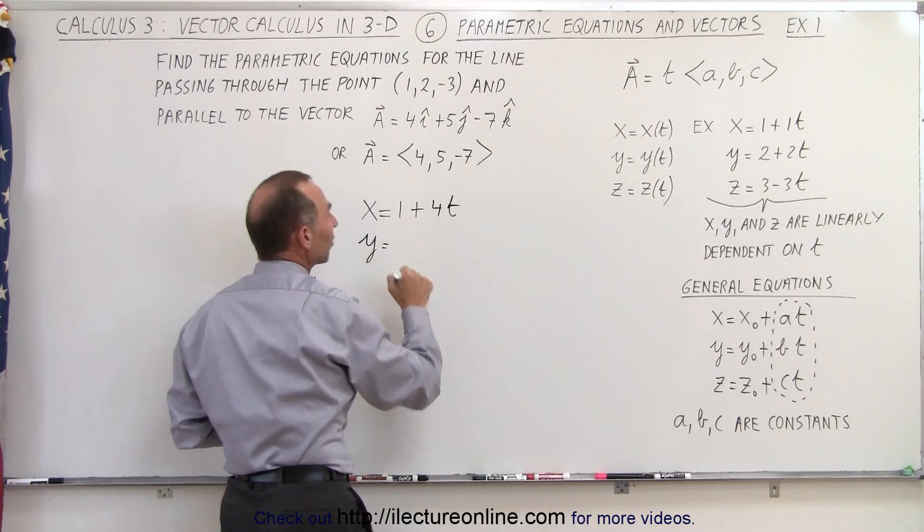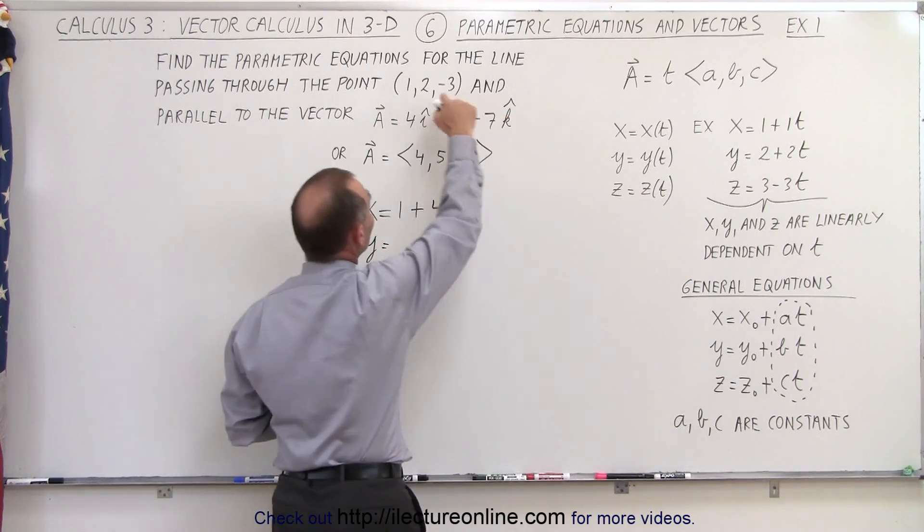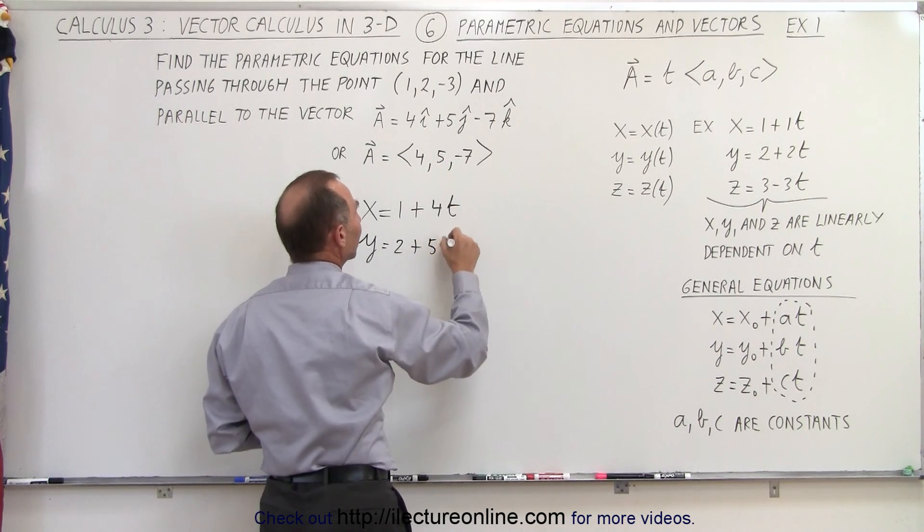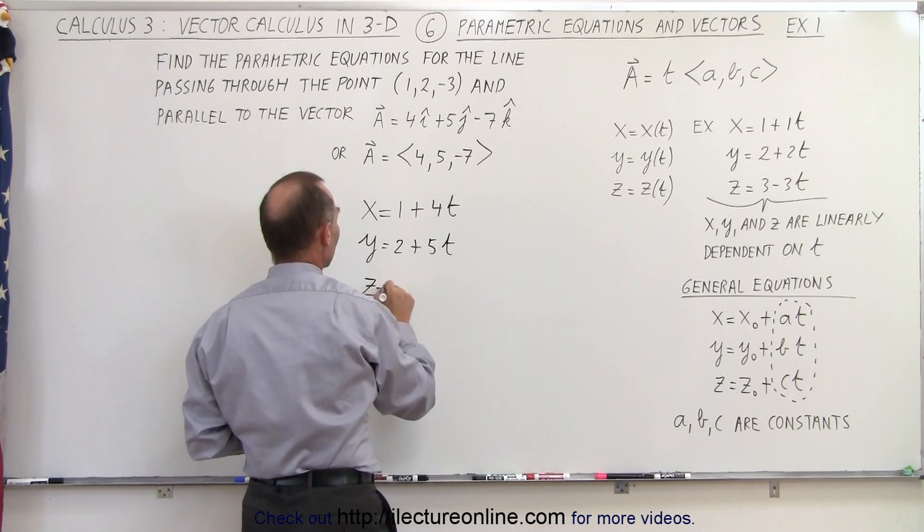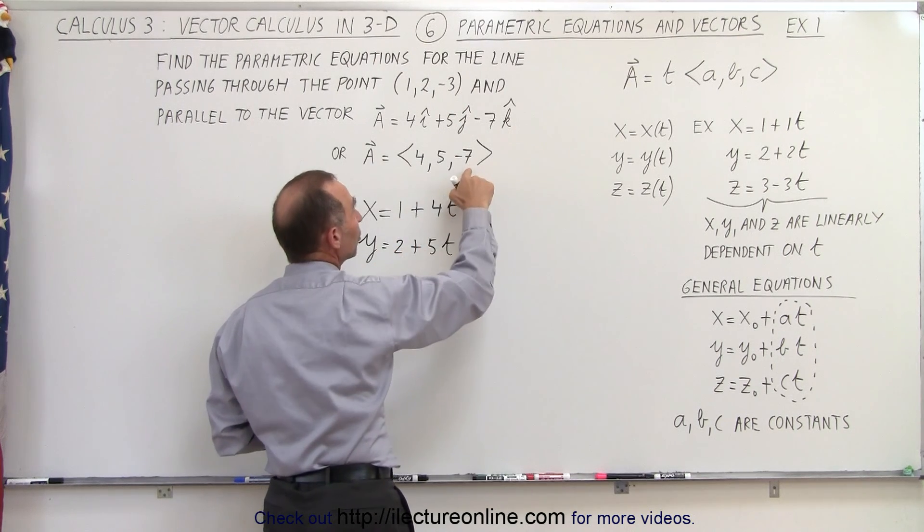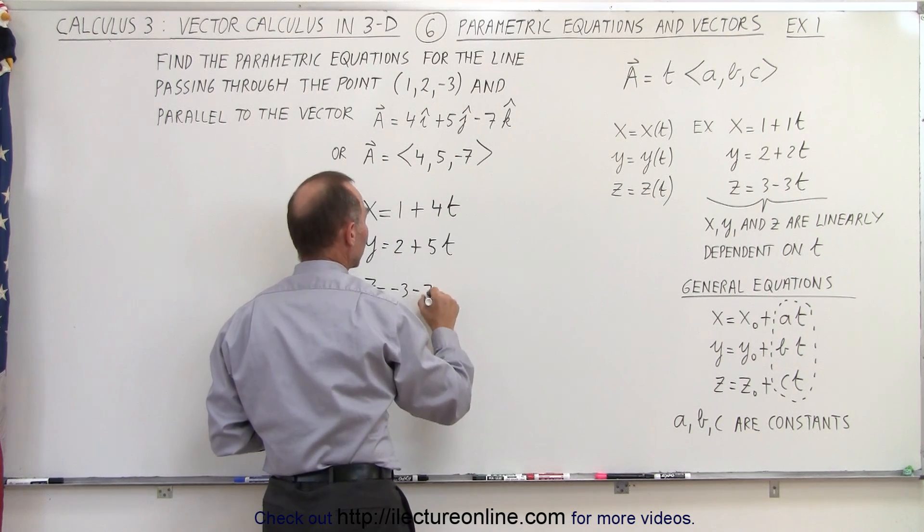y is defined as the initial position y, which is defined by 2, plus the change in y, which in this case is going to be 5 times t, and z is defined as the initial position, -3, and the change in this case is minus 7, so minus 7t.